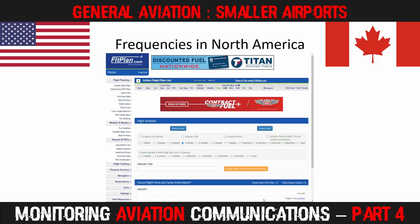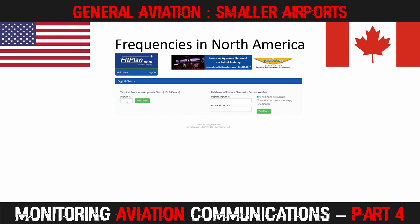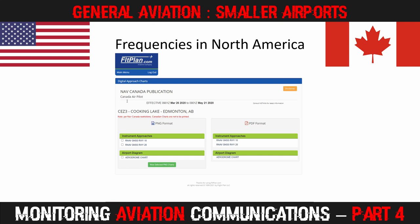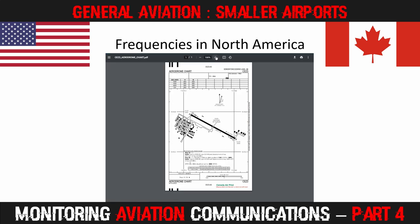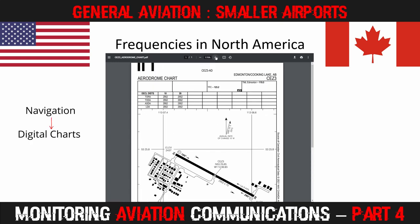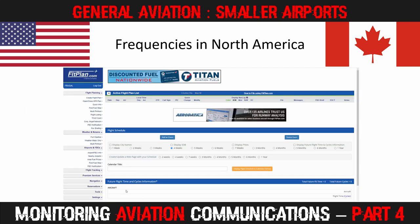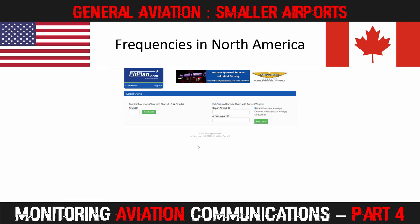The best way to access frequencies for individual airports is from the official publications. If you're a free member of the flightplan.com website, you can access the current charts and VFR maps that many general aviation aircraft use. These charts are good for both the US and Canada. When you're logged in, click Navigation, then Digital Charts, enter an Aerodrome ICAO code and you can view the chart with frequency information. To access the wide area charts, hit Navigation and Digital Charts again, but this time click the Sectionals radio button.